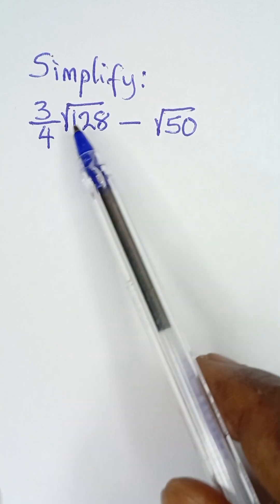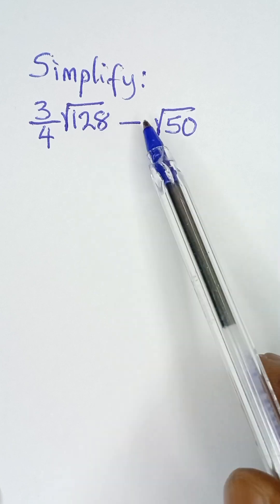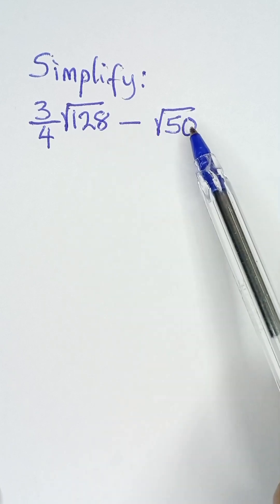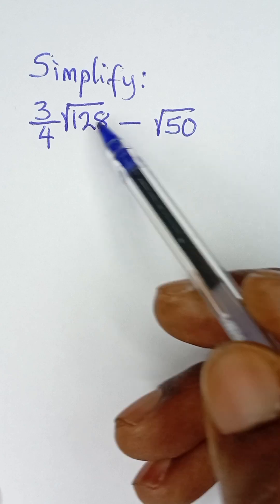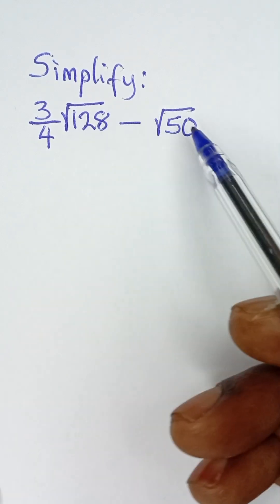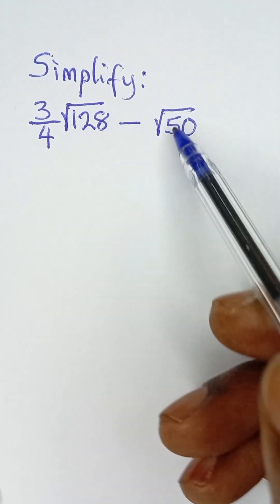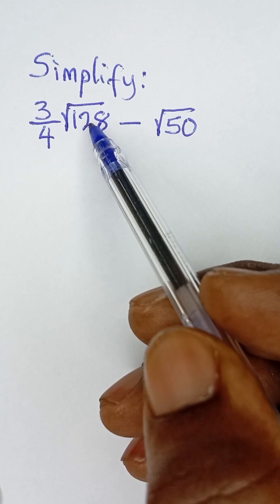Simplify 3 over 4 root 128 minus root 50. What we need to do is break these numbers into two numbers in the root sign such that one of them is a perfect square.